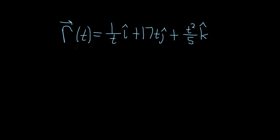In this problem we have to differentiate this vector-valued function. In order to differentiate this, we just have to differentiate each component. So we have to differentiate the 1 over t, differentiate the 17t, and then differentiate t squared over 5.